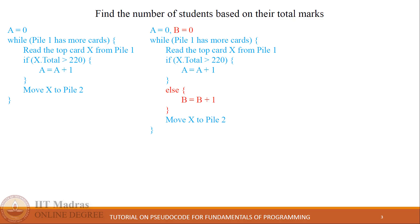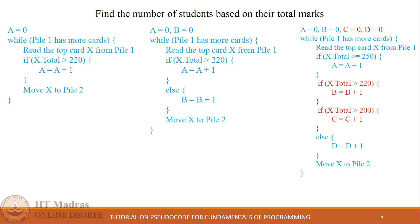In such a case we have to add more if blocks and create a ladder of filtering conditions. In this third pseudo code, we are counting the number of students based on their total marks in four different categories. Variable A will count the number of students who have scored 250 or more marks.